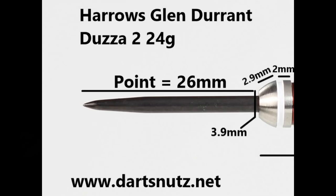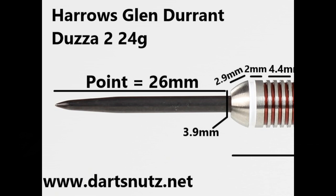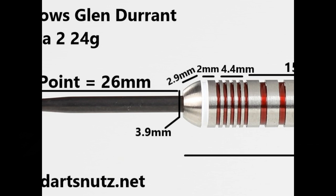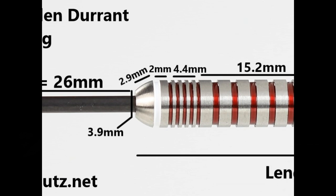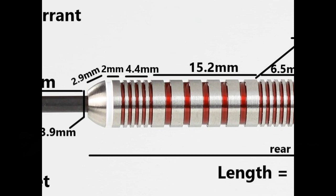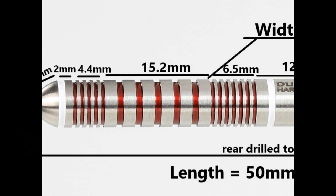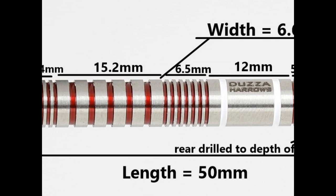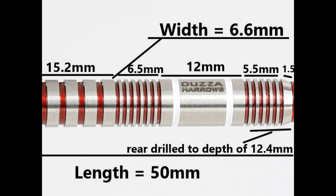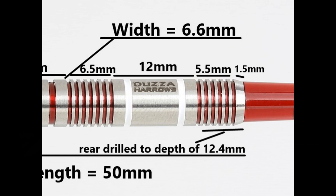The darts are fitted with a 26 millimeter black coated point. There's a torpedo bull nose smooth section of 2.9 millimeters, then a ring and groove of 2 millimeters, then very thin rings and grooves of 4.4 millimeters, then a wide section of wide grooves and rings of 15.2 millimeters, then more narrow rings and grooves of 6.5 millimeters, then a mostly smooth section with two white grooves of 12 millimeters, then more narrow rings and grooves of 5.5 millimeters, and a small section at the end of 1.5 millimeters. Length is 50 millimeters and width is 6.6 millimeters.